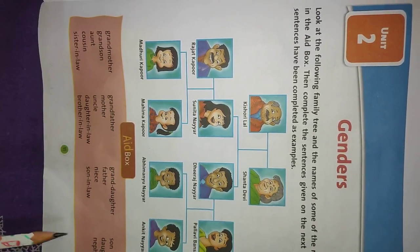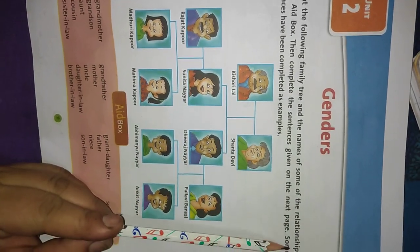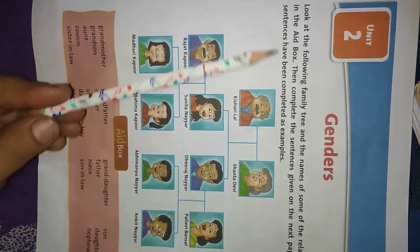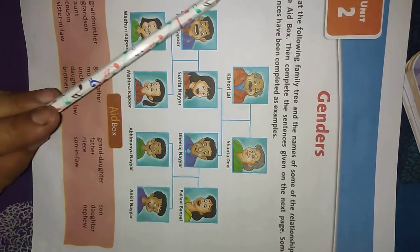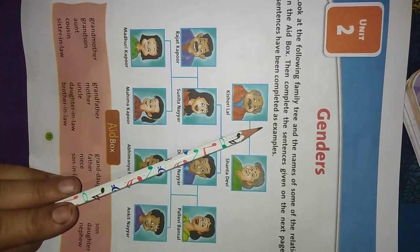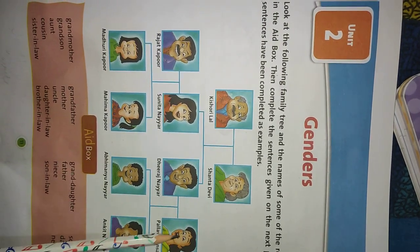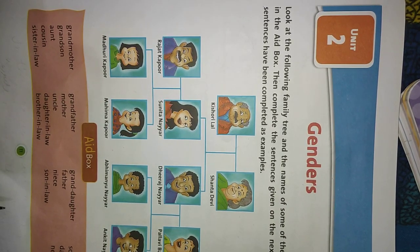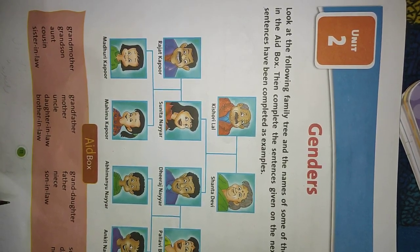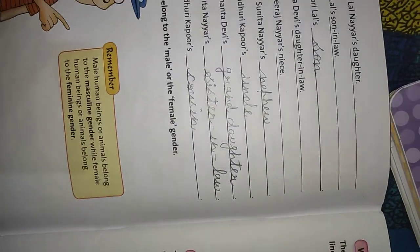Look at the following family tree and the names of some of the relationships in the box. Then complete the sentences given on the next page. Some sentences have been completed as examples. Students, it is a family tree of Kishore Lal and his family. See the picture carefully, read the book carefully, and fill in the blanks on page number 12.